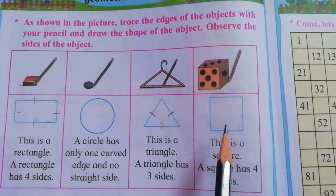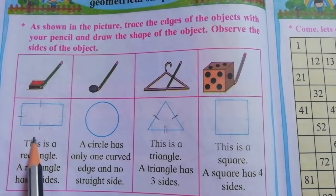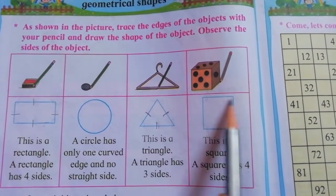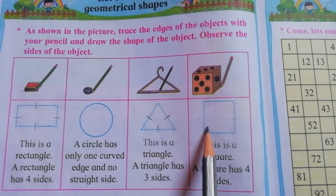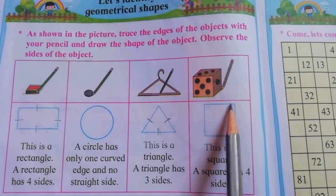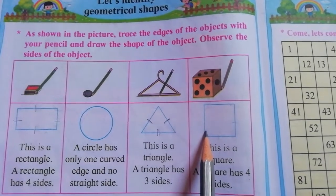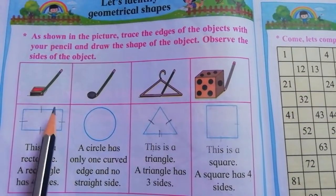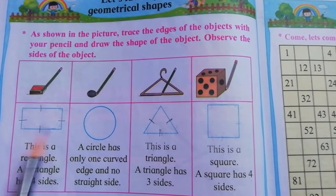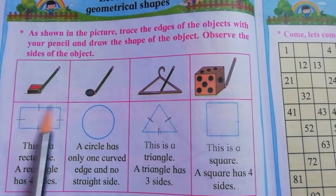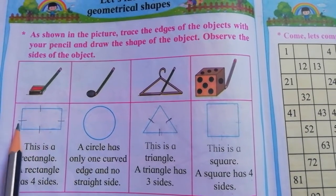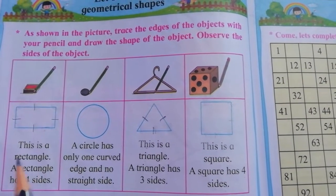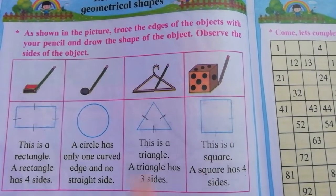Now students, what is the difference between square and rectangle? Look here. A square has all four sides equal in length. But in a rectangle, all four sides are not equal. Only opposite sides are equal in length. So this is the difference between your rectangle and square.